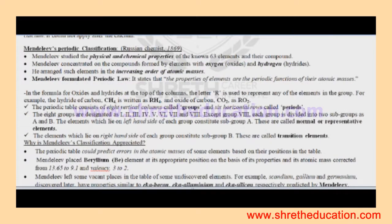Mendeleev's classification. Mendeleev, a Russian chemist. There were 63 elements. Mendeleev studied the physical and chemical properties as the base for classifying elements.